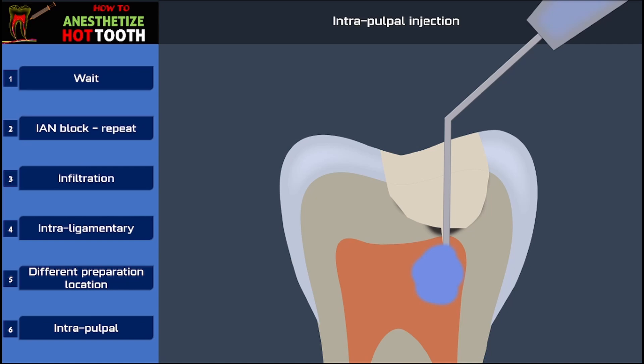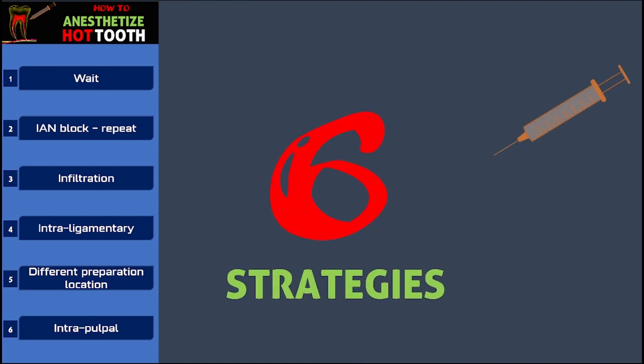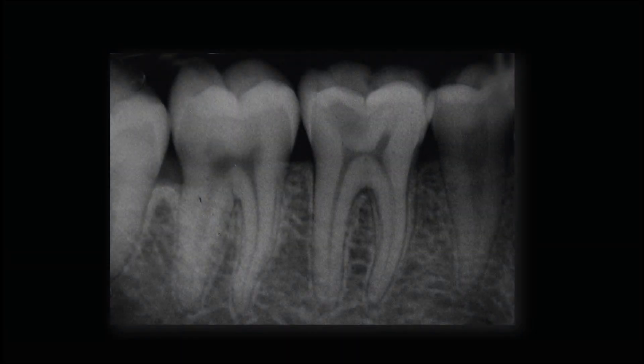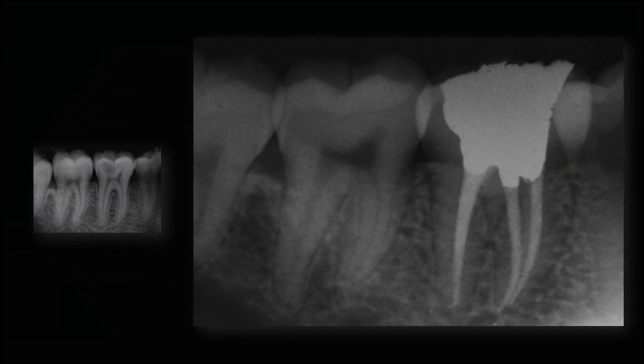The only problem is that giving a good intrapulpal anesthesia requires a steep learning curve. But this is the ultimate weapon that every one of you must practice so you can do treatment without causing much pain to your patient. One among these six strategies will help you anesthetize a tooth that is very difficult or impossible to anesthetize by other means. Without proper anesthesia it is impossible to expect good cooperation from the patient, and without good patient cooperation it is impossible to do good treatment.